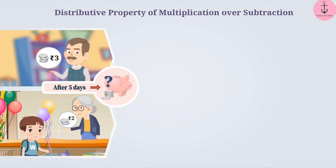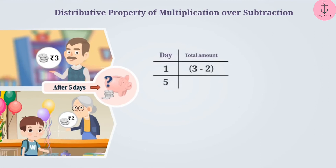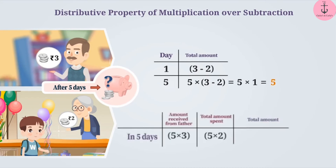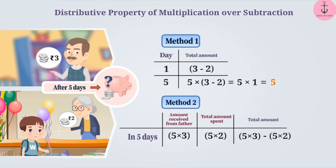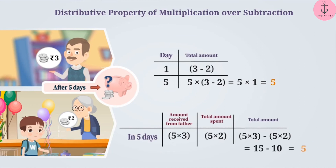We can solve this in two ways. The first method: 5 into (3 minus 2) gives you 5 as the answer. The second method: 5 into 3 minus 5 into 2 also gives 15 minus 10, that is 5. Here, 5 into (3 minus 2) is equal to 5 into 3 minus 5 into 2.